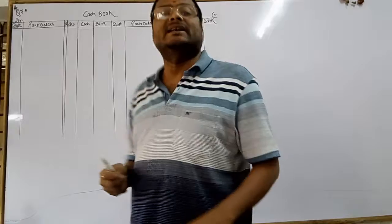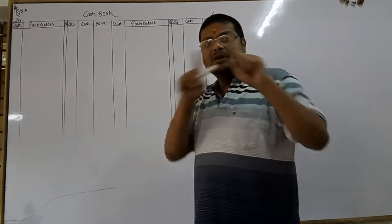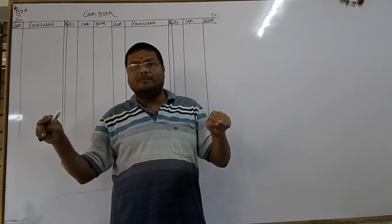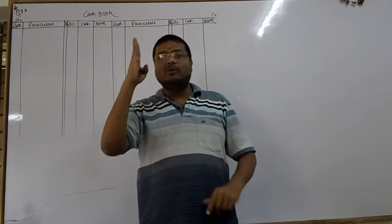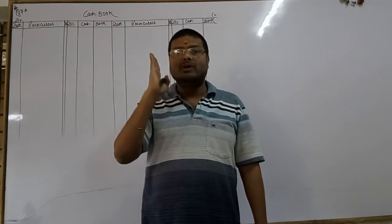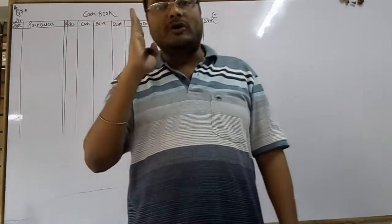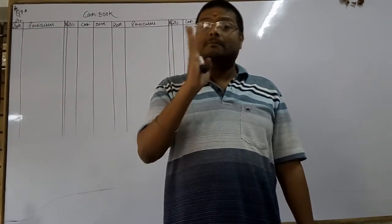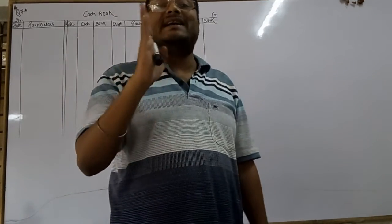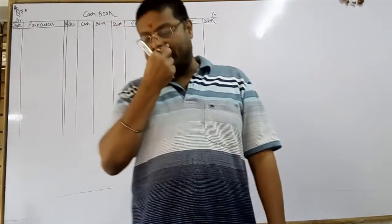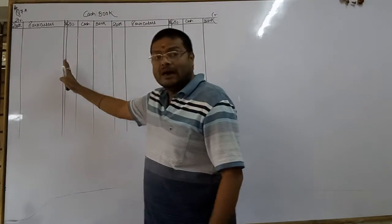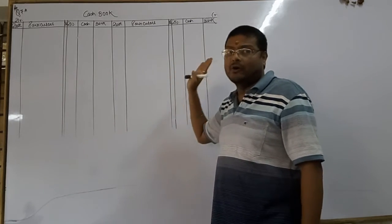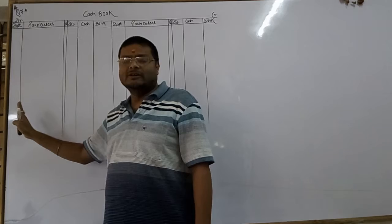I have told you in the last video, type of cash book. Main cash book and petty cash book. Main cash book divided into 3 parts: single column cash book, double column cash book and 3 column cash book. Single column cash book includes only cash column. Double column cash book includes cash and discount, bank and discount, and cash and bank column. 3 column cash book includes discount, cash, bank. Discount, cash and bank columns are known as 3 column cash book.